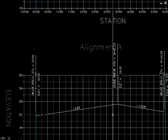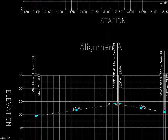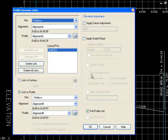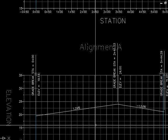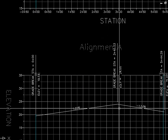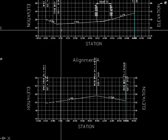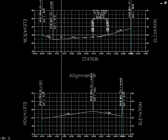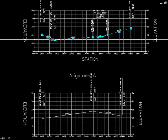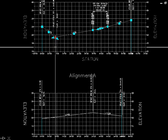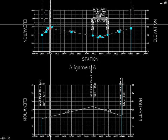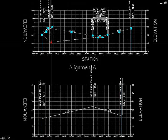Now if I come in here and adjust this link and turn off the full profile link option, now only this one PVI will move up and down when I move profile B. The PVIs on either end are now staying in their position, and only the one PVI is moving.